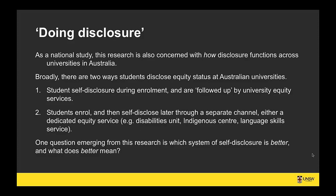We also looked at how disclosure functions across different universities. There are two broad systems of disclosing equity status at Australian universities: the first is self-disclosure during enrolment followed up by other university equity services; the second is enrolling and then the student self-disclosing later through a separate channel — such as an equity service, a language skills service, a learning centre, or a specific Indigenous centre.